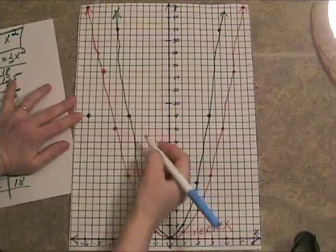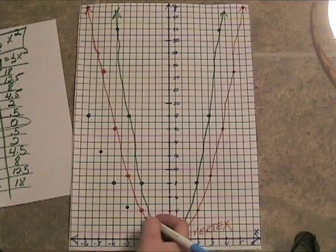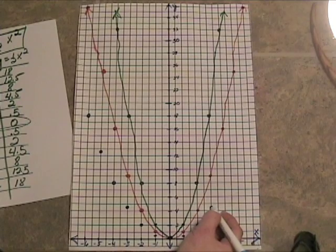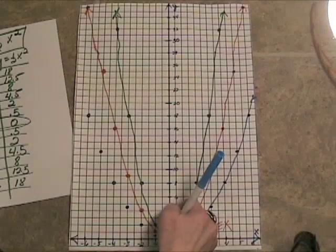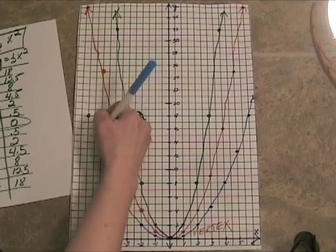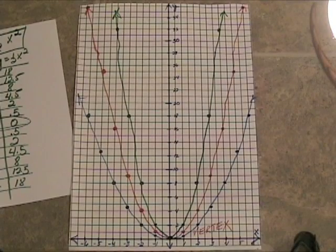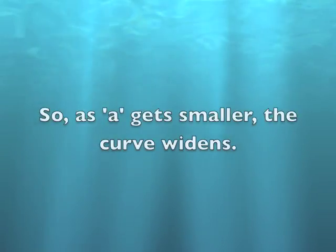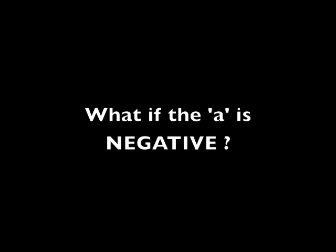Well, let's see what that looks like graphically. So we have a dot right there. Then negative 5, 12 and a half. Negative 4, 8. Negative 2, 2. Positive 1, half. Positive 2, 2. Positive 4, 8. And the parabola is wider. And I guess if you think about it, that makes sense.